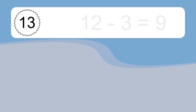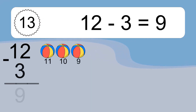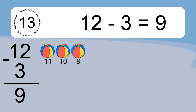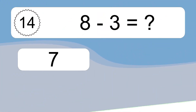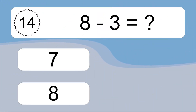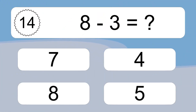12 minus 3 equals what? 12 minus 3 equals 9. Let's count it: 11, 10, 9.